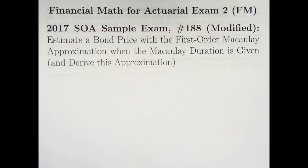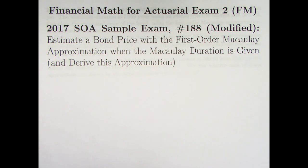We're going to be estimating a bond price with something different — not the First Order Modified Approximation, but instead the First Order Macaulay Approximation. The First Order Modified Approximation uses the Modified Duration. The First Order Macaulay Approximation uses the Macaulay Duration, and we're going to be given the Macaulay Duration. To add a little more meat to this, we're also going to derive the approximation.